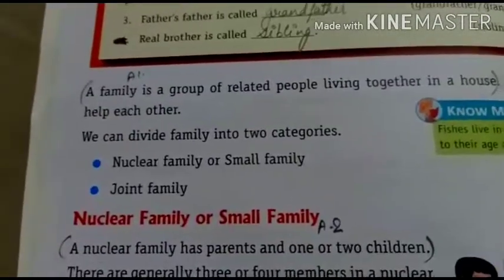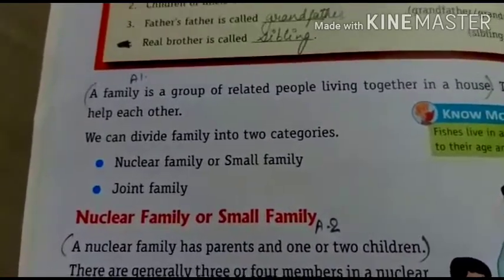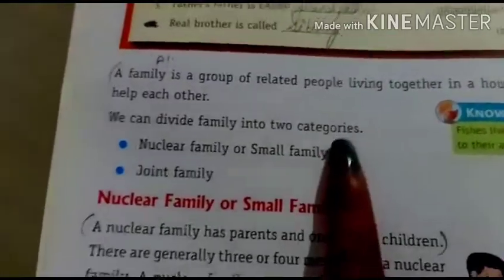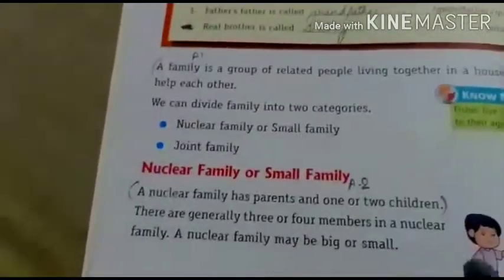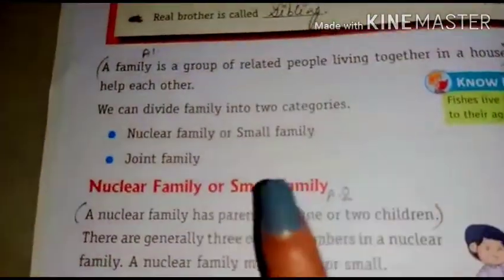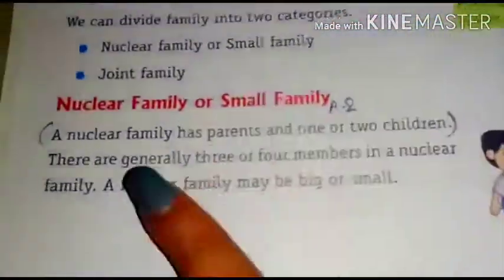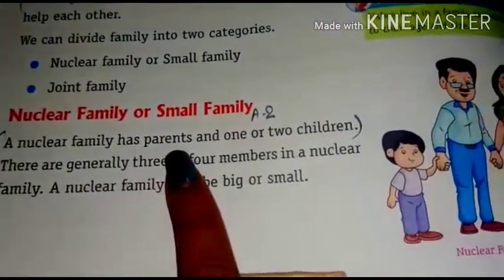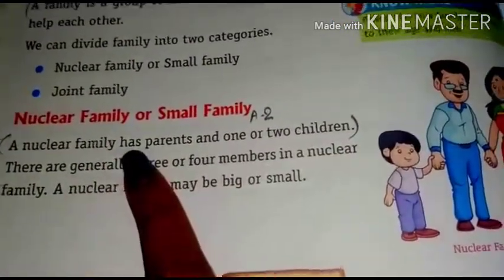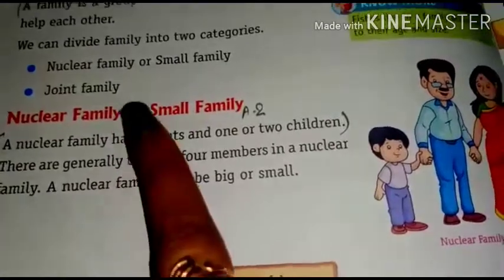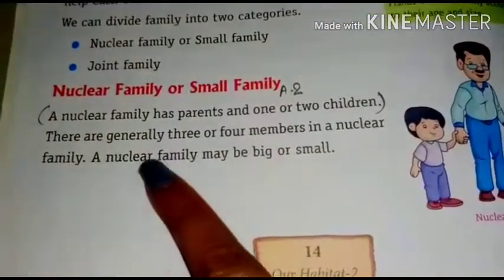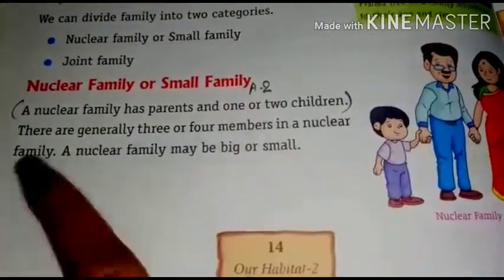We can divide family into two categories: nuclear family, or small family, and joint family. Now, nuclear family or small family — a nuclear family has parents and one or two children. It's a small family — father, mother, and one or two children. There are generally three or four members in a nuclear family.